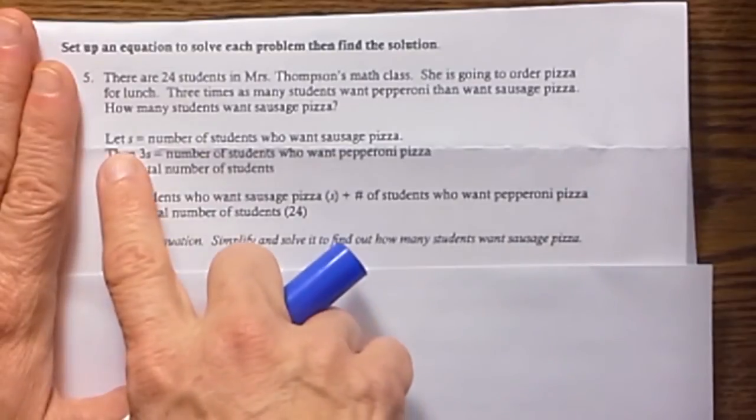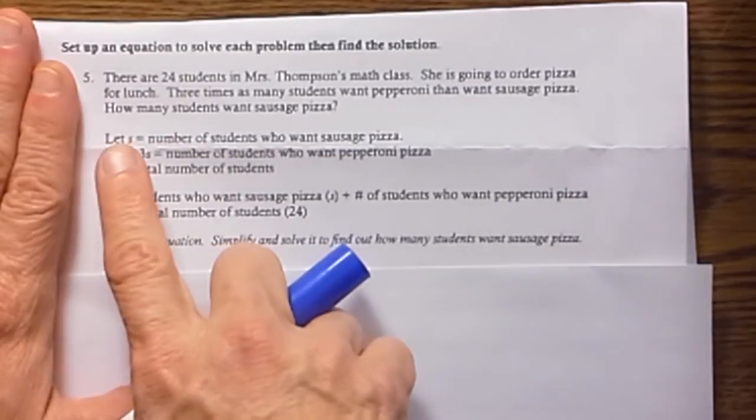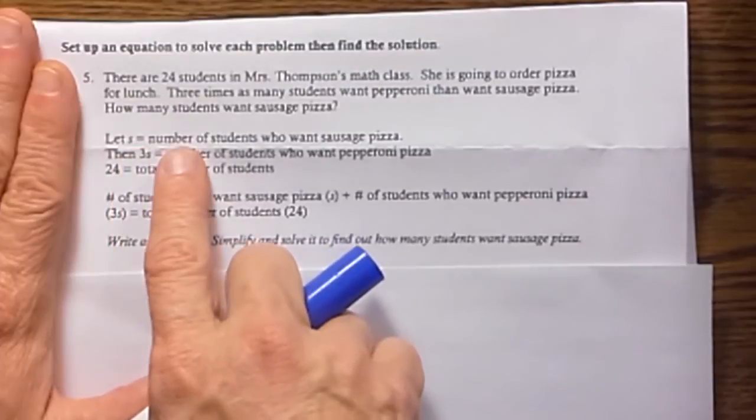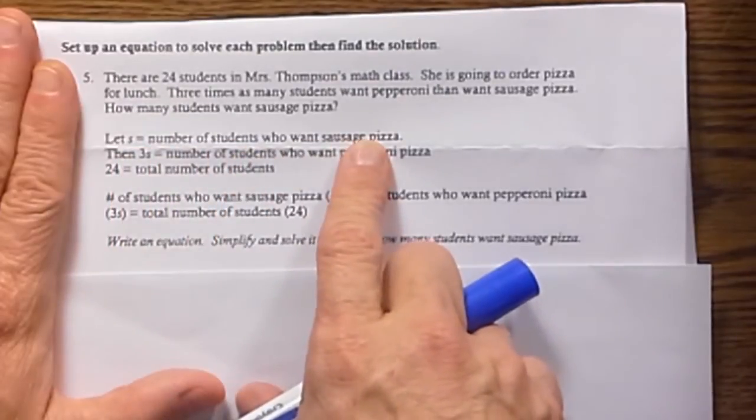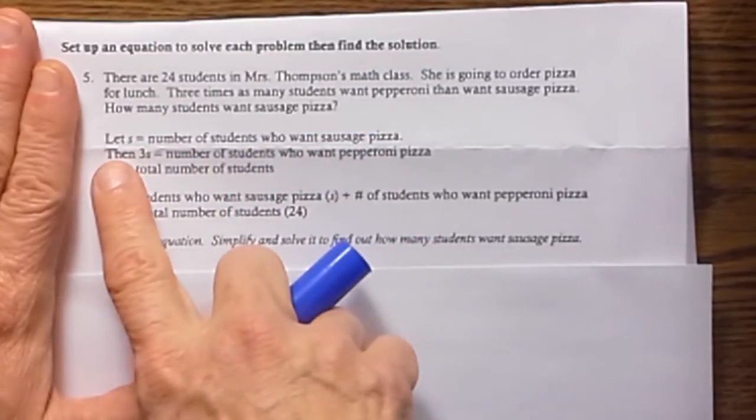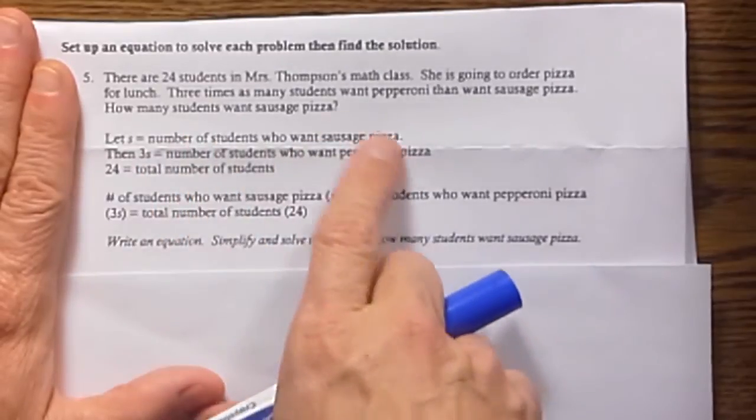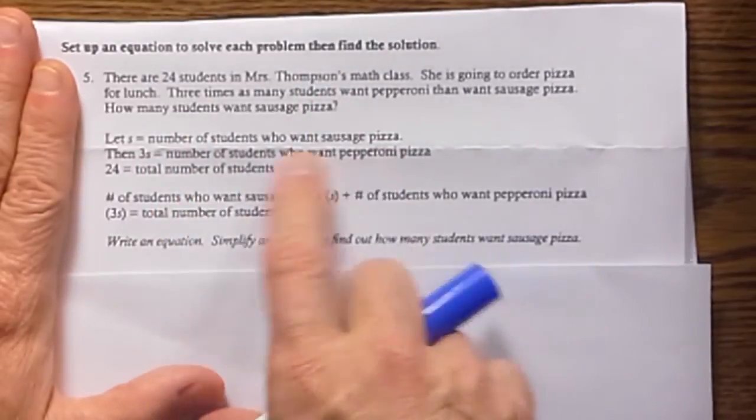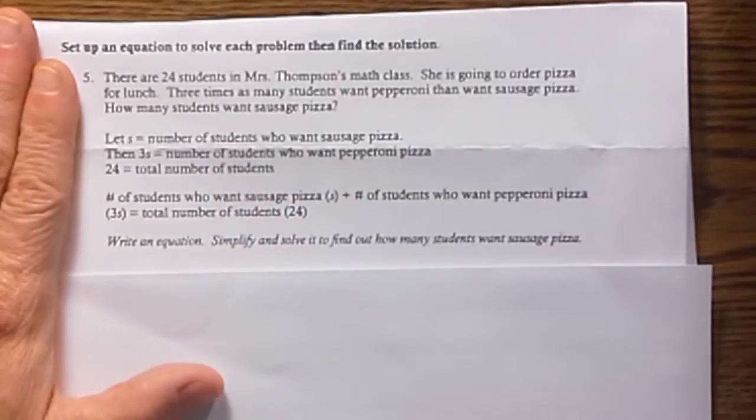We are going to start by first defining our variables. So S is equal to the number of students who want sausage. So 3S is the number of students who want pepperoni because there are 3 times as many that want pepperoni. The total number of students is 24.